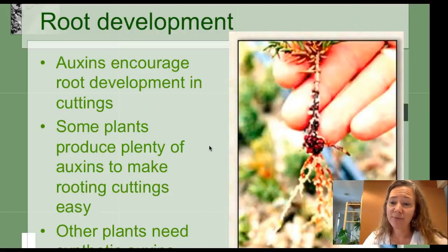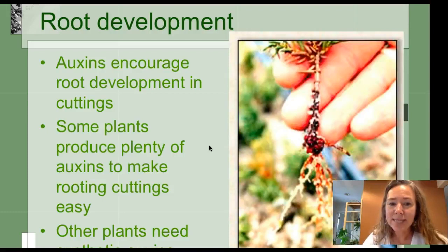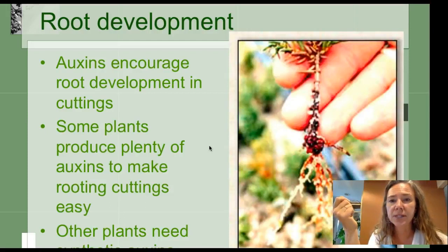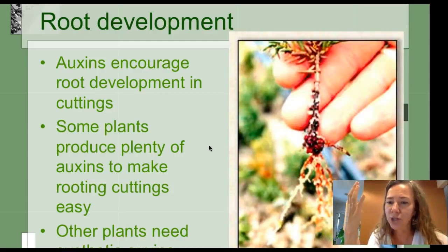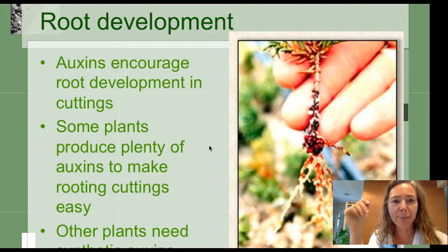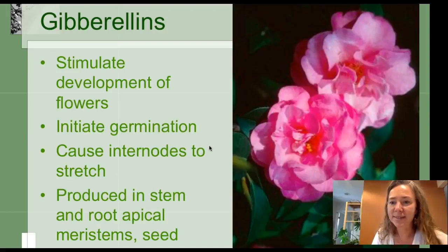Auxin is also very important for root development. In a lot of our cuttings, we use a synthetic form of auxin to dip our cuttings into to create and initiate roots. There are actually natural forms of auxin — for example, in willow trees in the genus Salix, they produce a lot of auxin naturally. So if you needed a cheap and organic rooting hormone, you can take little pieces of stem from willow trees or shrubs, cut them up, and soak them in water for a few hours. That's good for a fair amount of cuttings as long as you use it right away. So auxin is a very, very important PGR.